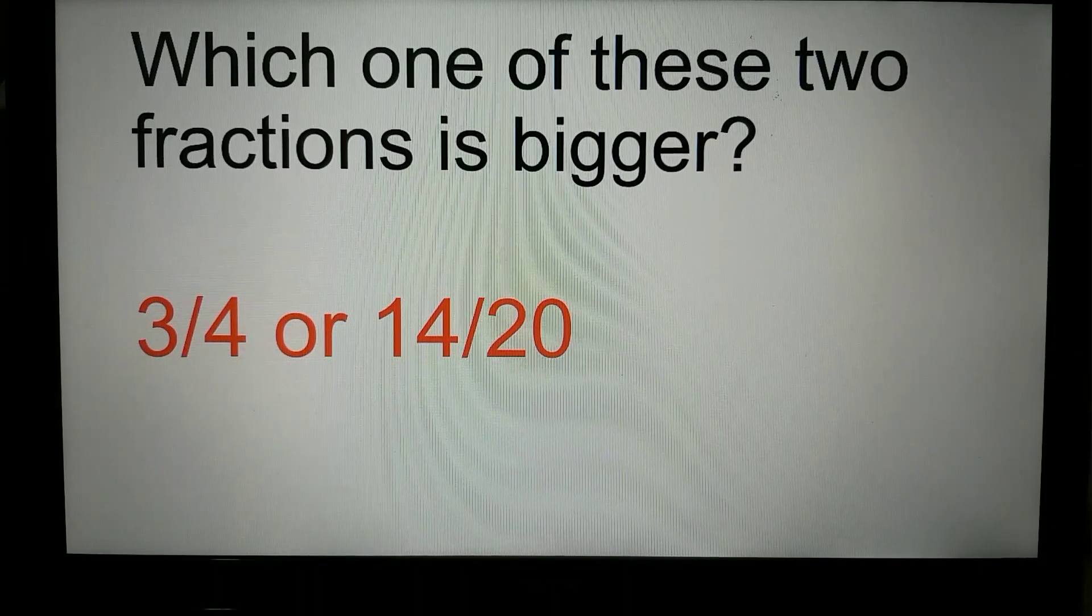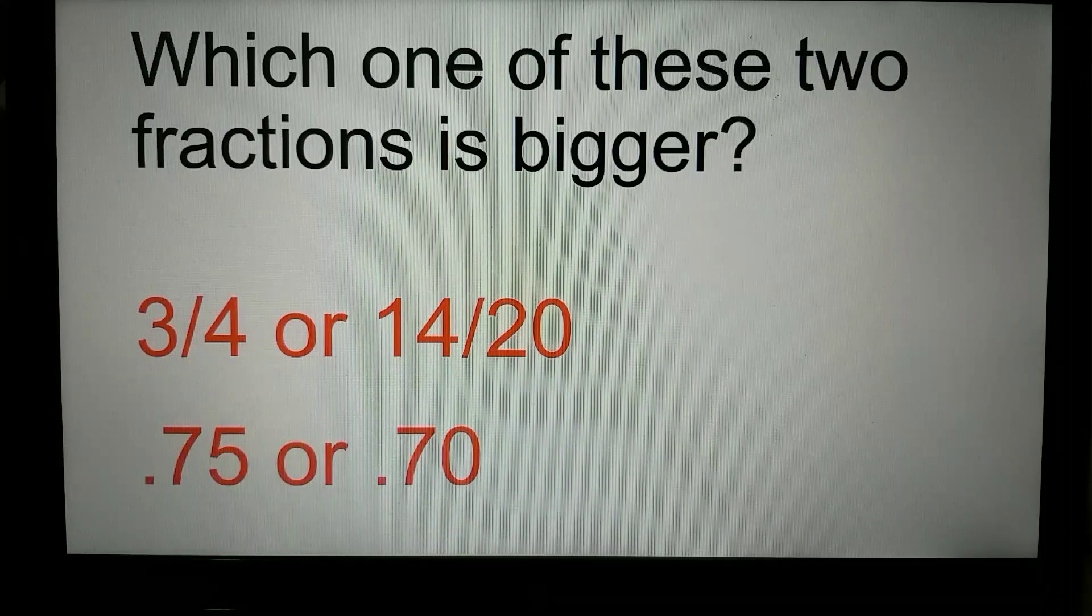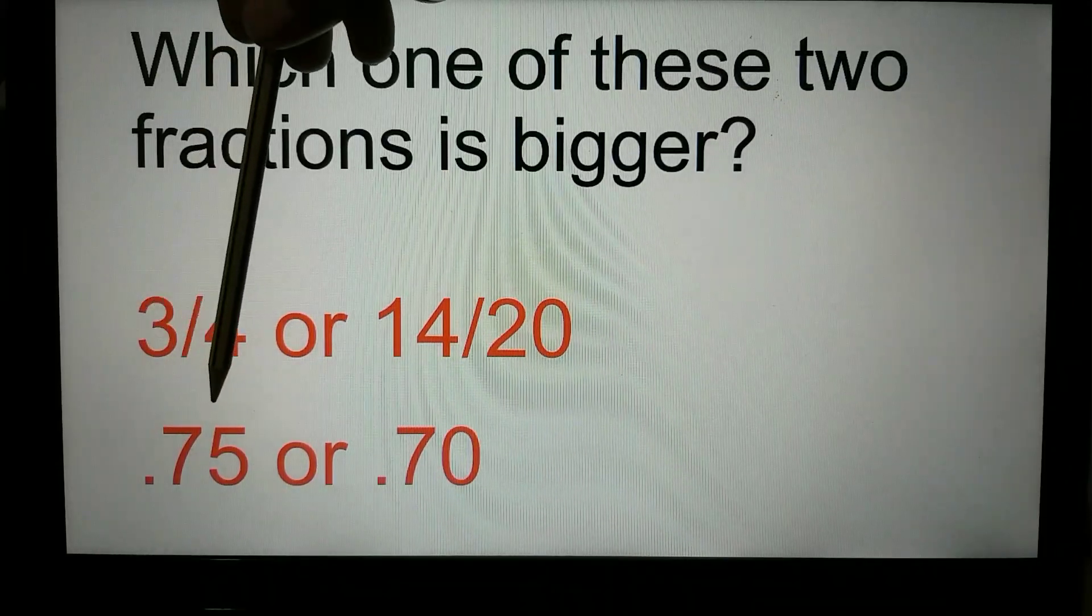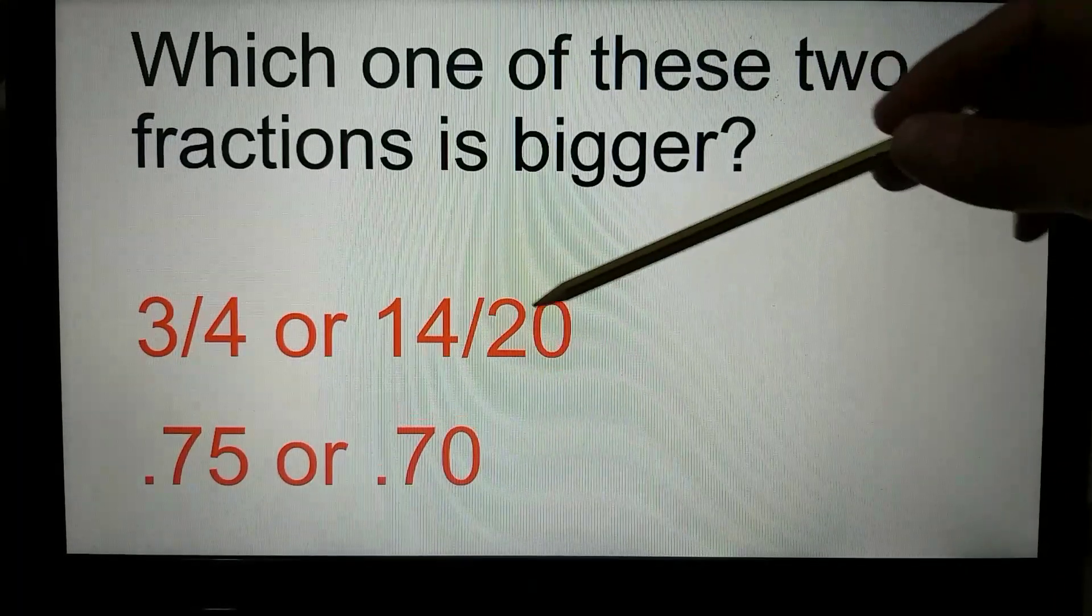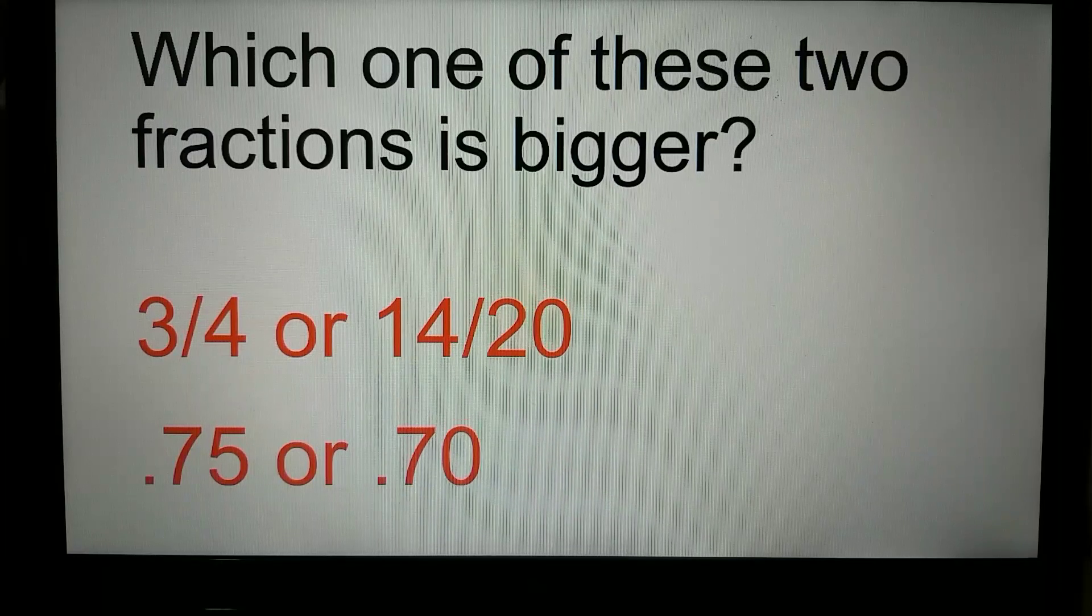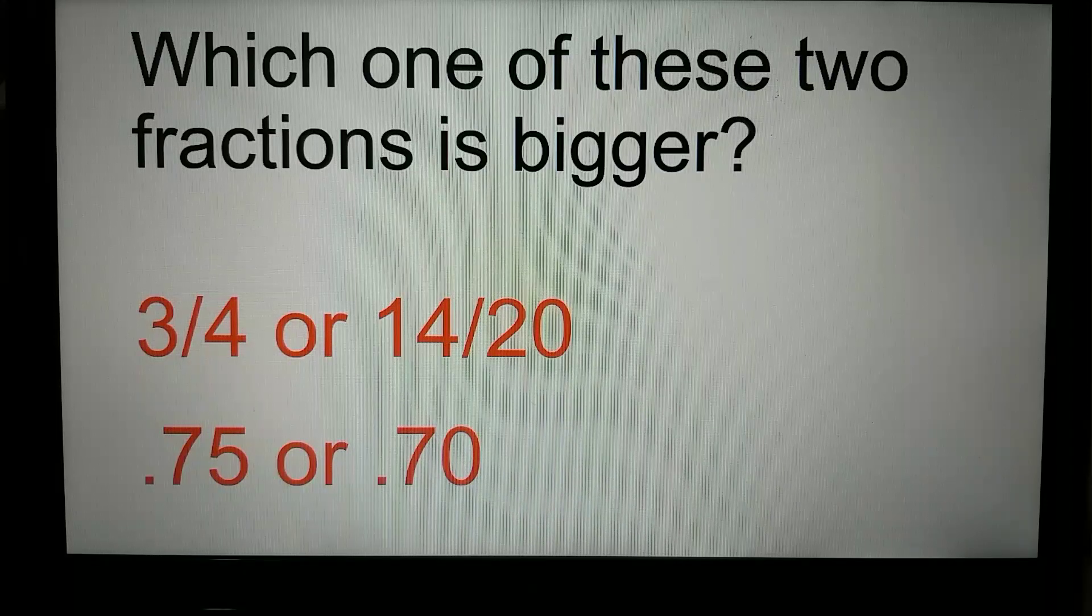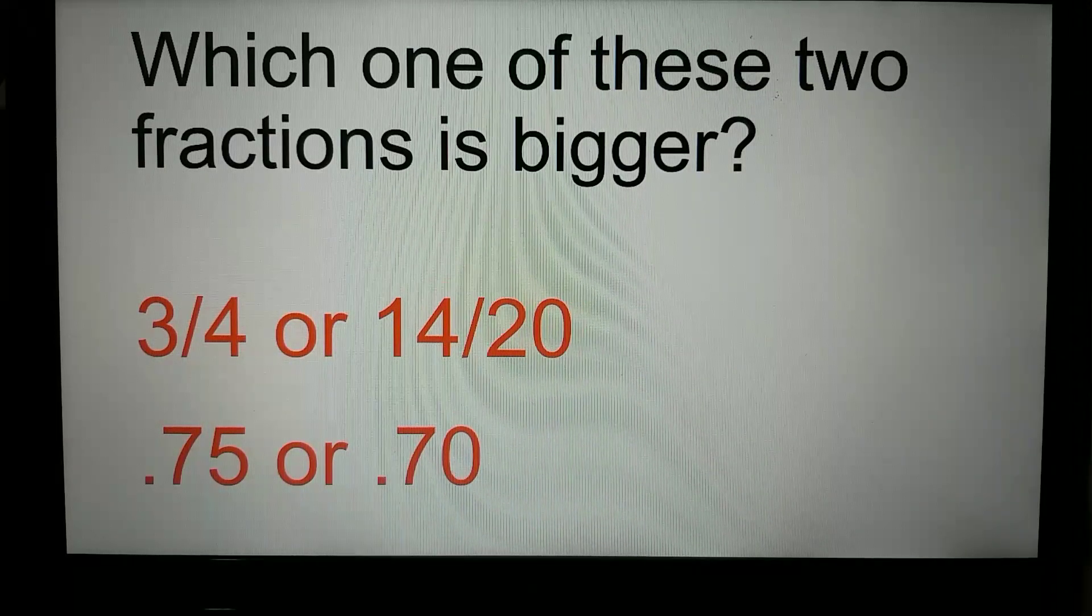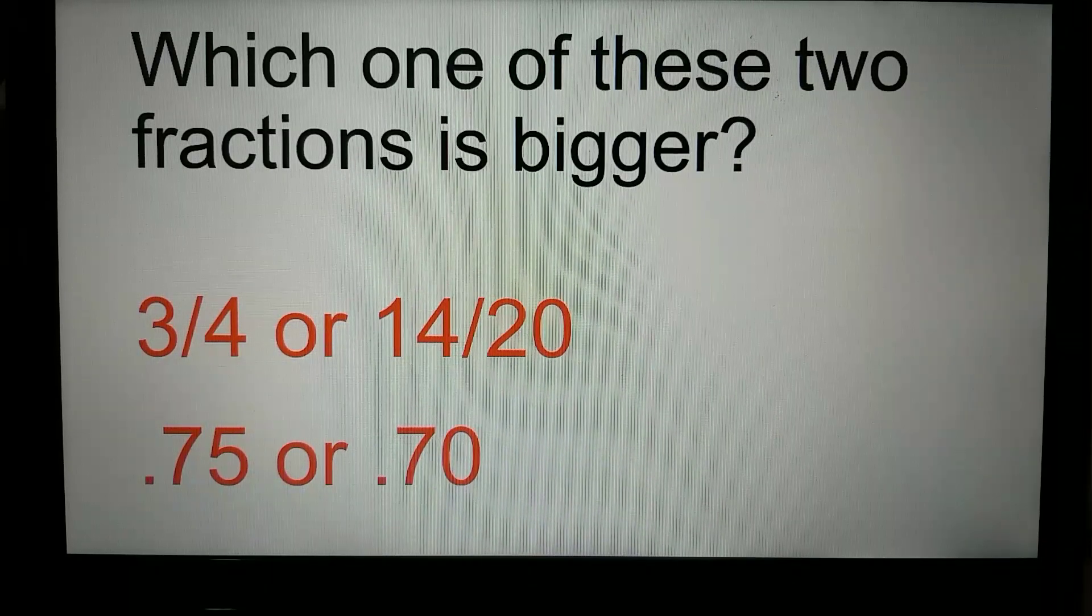It looks a bit hard, but if I convert them into decimals, look: 3 by 4 is 0.75 in decimal format and 14 divided by 20 is 0.70 in decimal format. Now we can tell easily that the first one is bigger than the second one. 3 by 4 is bigger than 14 divided by 20. That's how the decimal system makes it easy to compare numbers.